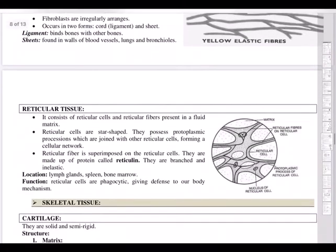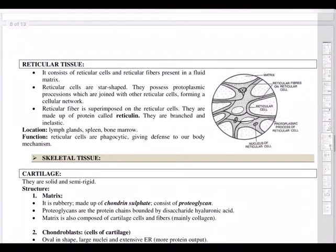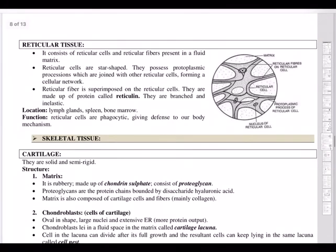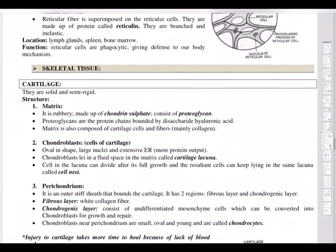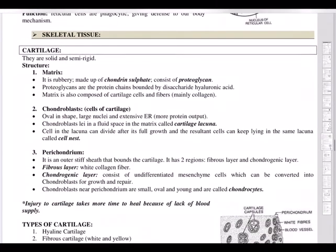Reticular tissue consists of reticular cells and reticular fibers in a fluid matrix, made up of a protein called reticulin. Its locations include lymph glands, spleen, and bone marrow. Reticular cells are phagocytic — they engulf harmful particles and provide defense to the body.